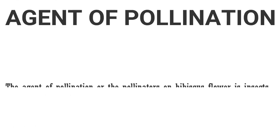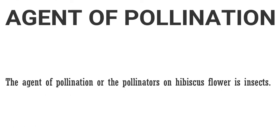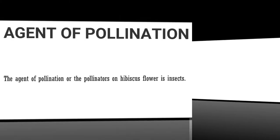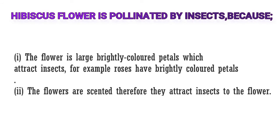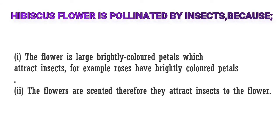Pollination is supported by the agent of pollination. The agent of pollination or the pollinators on hibiscus flower is insects. The pollinators of hibiscus flower are insects because of the following reasons: one, the flower is large with brightly colored petals which attract insects, for example roses have brightly colored petals.